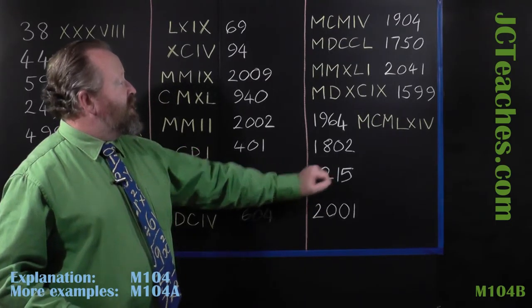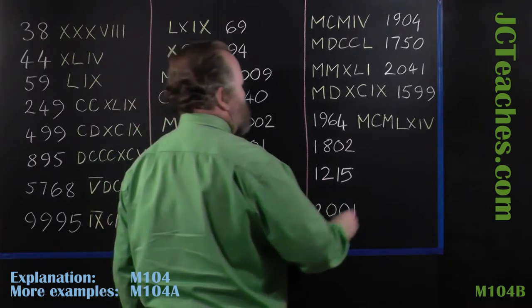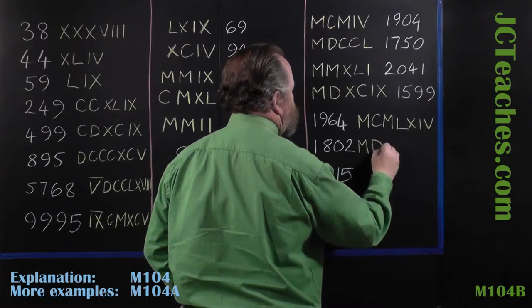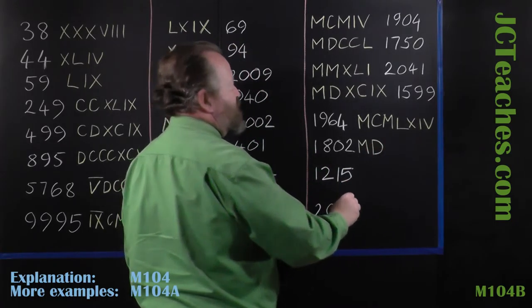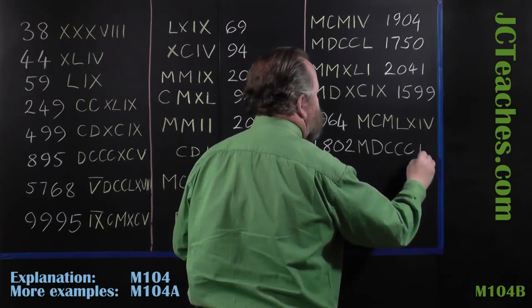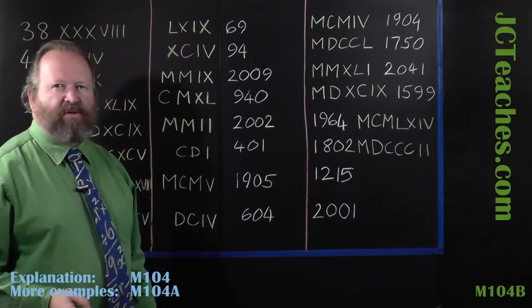1,802, that would be 1,000, 500, 1600, 1700, 1800, and 2.